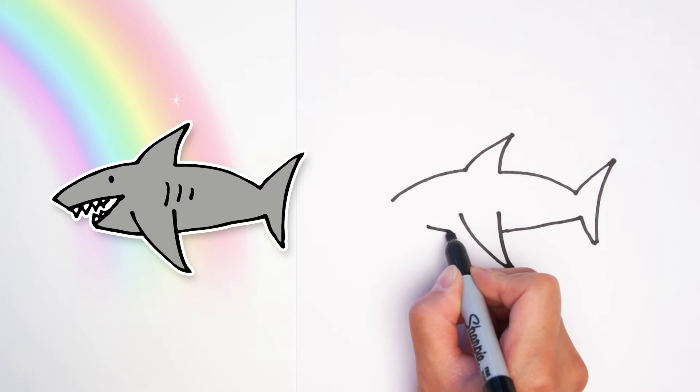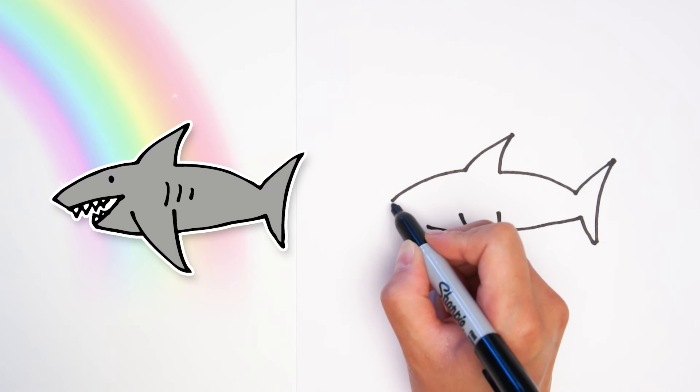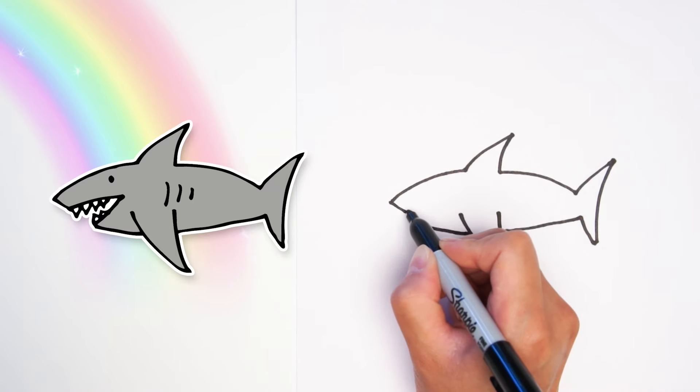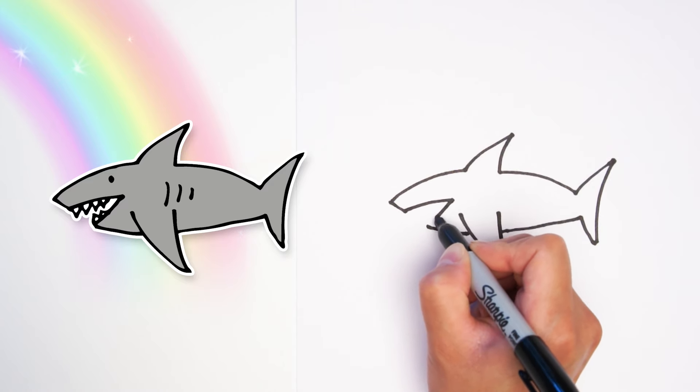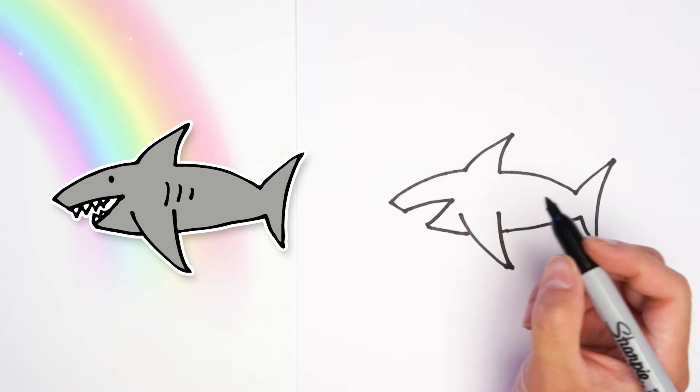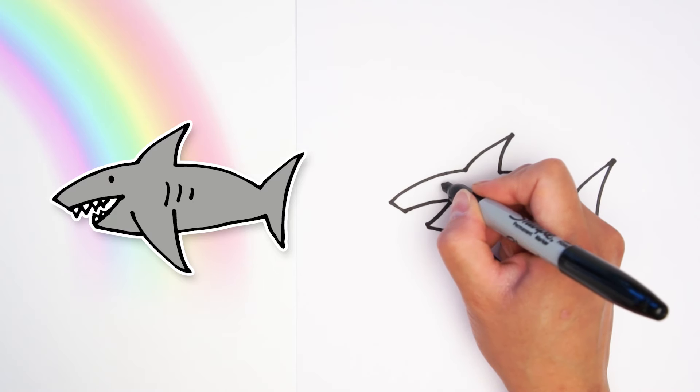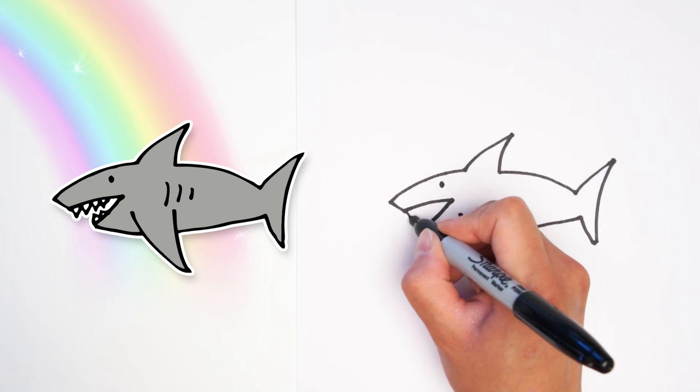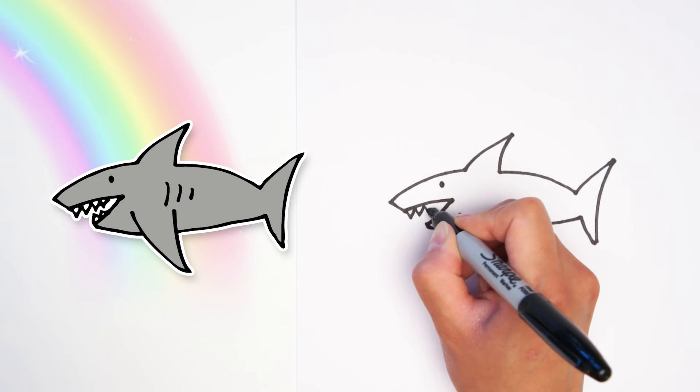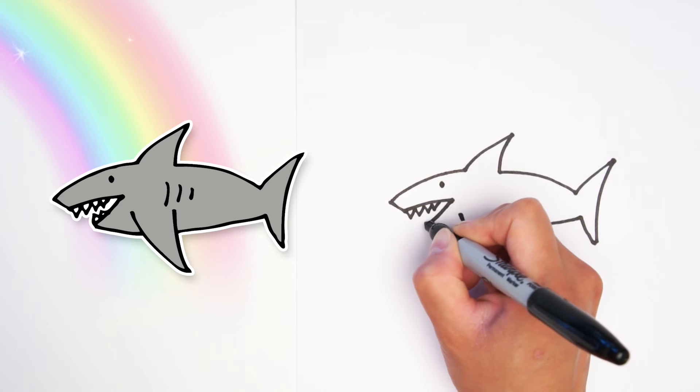Now we're going to connect the rest of the bottom of the body and then make a tip of the nose. Now draw inside for the mouth and let's add an eyeball right above the mouth and some teeth, some sharp jagged teeth inside the mouth.